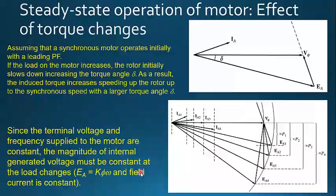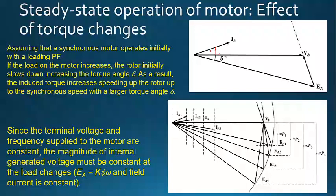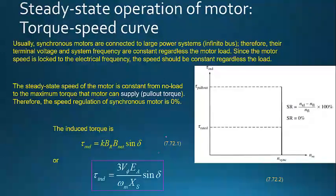As seen in the phasor diagram, the terminal voltage V_phase and the internally generated voltage E_A form the angle delta between them. There is also another angle, theta, between the current I_A and the phase voltage V_phase — that is the power factor angle. So we have two angles: theta between I_A and V_phase, and delta between V_phase and E_A. If we continue to open up this gap — increasing delta — we are increasing the torque. The question is: to what extent can we increase delta to get the maximum torque?